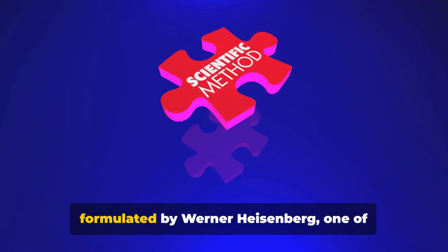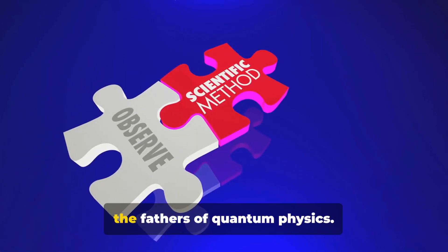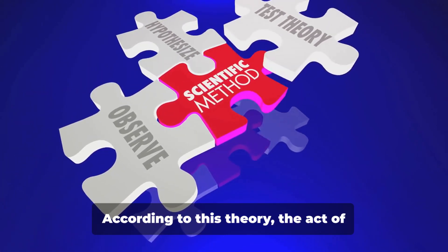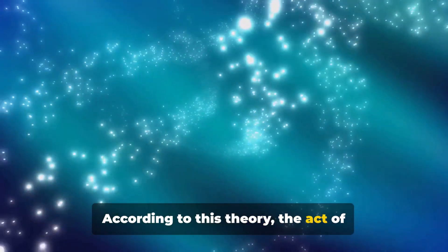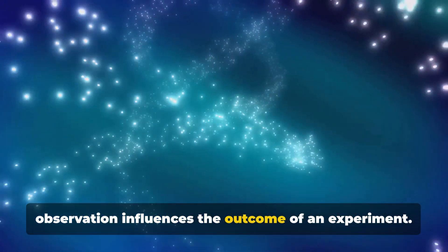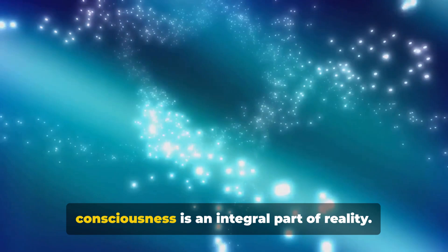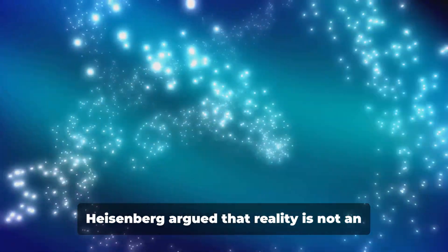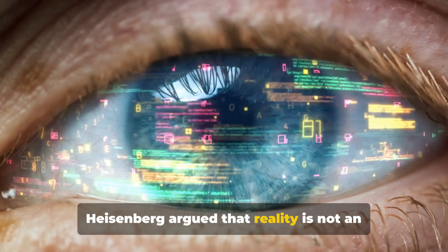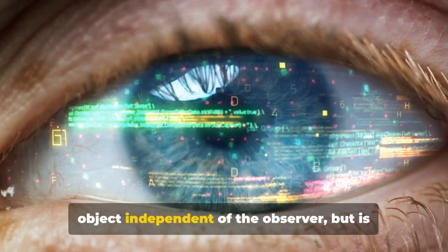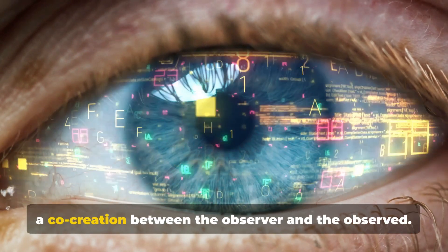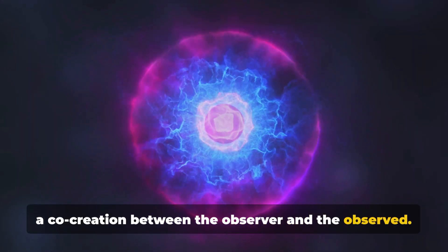The subject observer theory was formulated by Werner Heisenberg, one of the fathers of quantum physics. According to this theory, the act of observation influences the outcome of an experiment. In other words, the observer's consciousness is an integral part of reality. Heisenberg argued that reality is not an object independent of the observer, but is a co-creation between the observer and the observed.